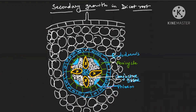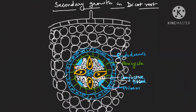Welcome back to the channel. In this video we are going to study secondary growth in dicot root. In the previous video, in the internal structure of dicot root, we did not study any cambium which is primary in origin. So they don't have any cambium primary in origin — they will make cambium which is secondary in origin. In dicot root, cambium, whether vascular or cork cambium, is entirely secondary in origin.